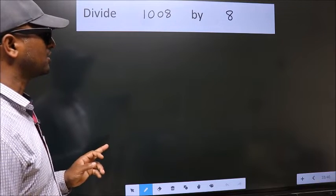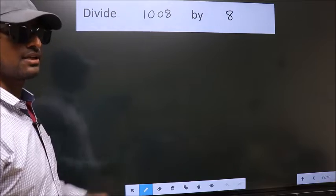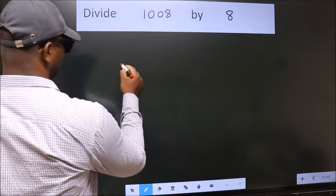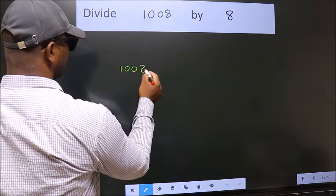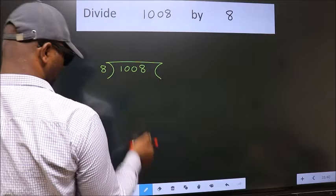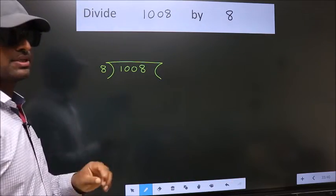Divide 1008 by 8. To do this division, we should frame it in this way. 1008 here, 8 here. This is your step 1.